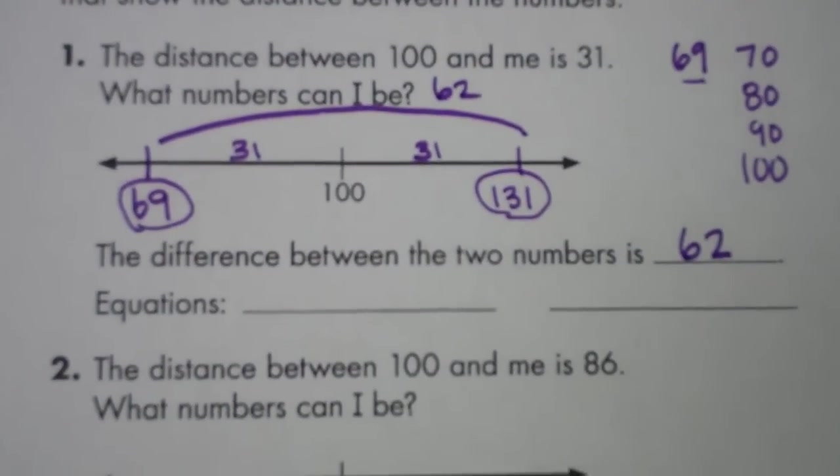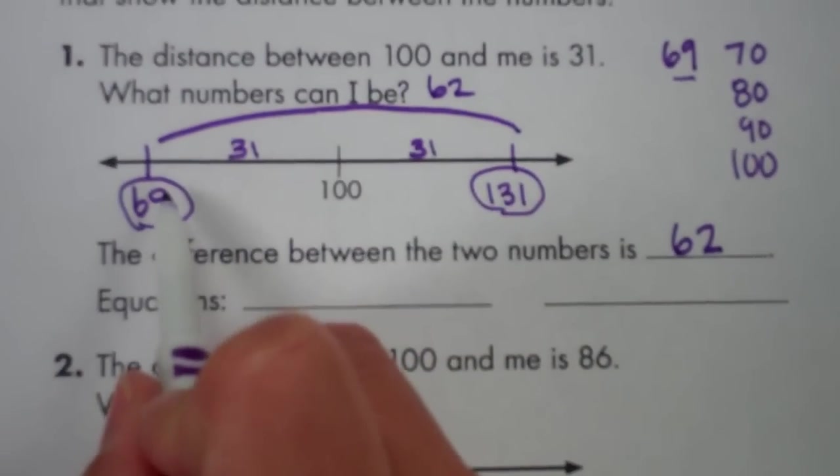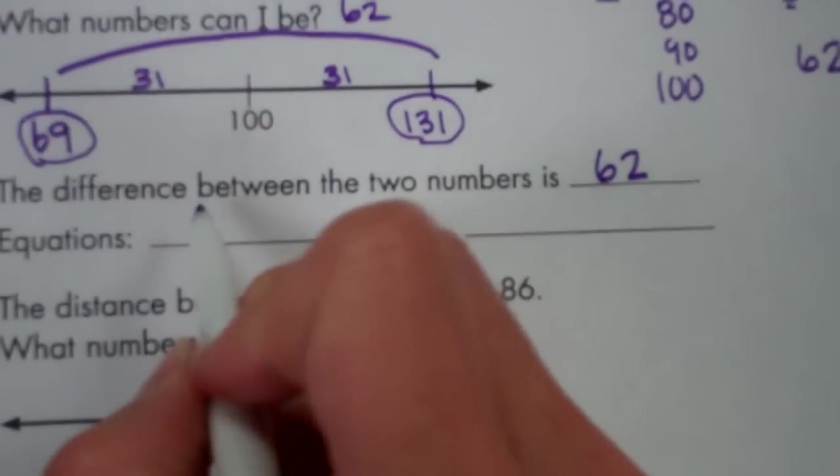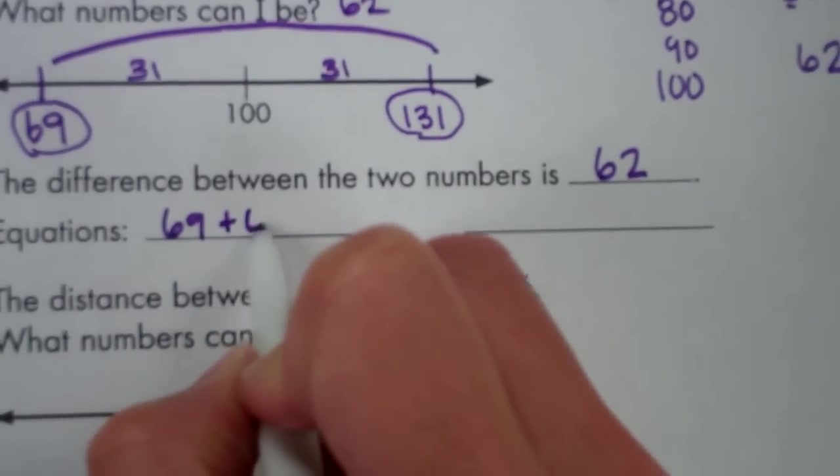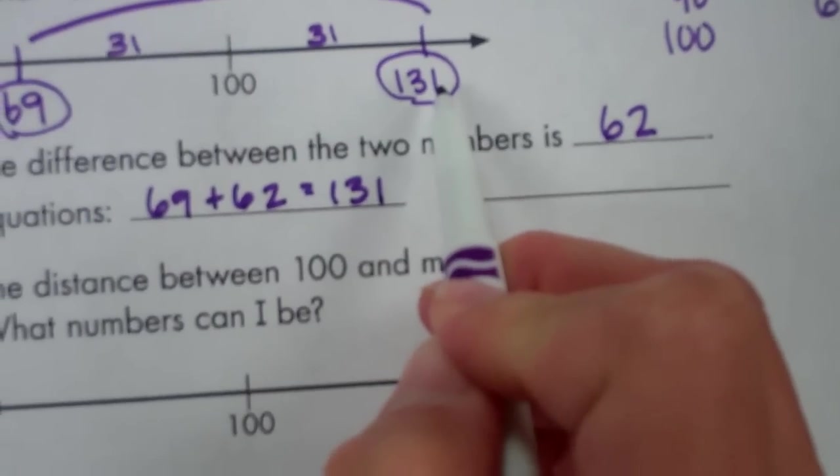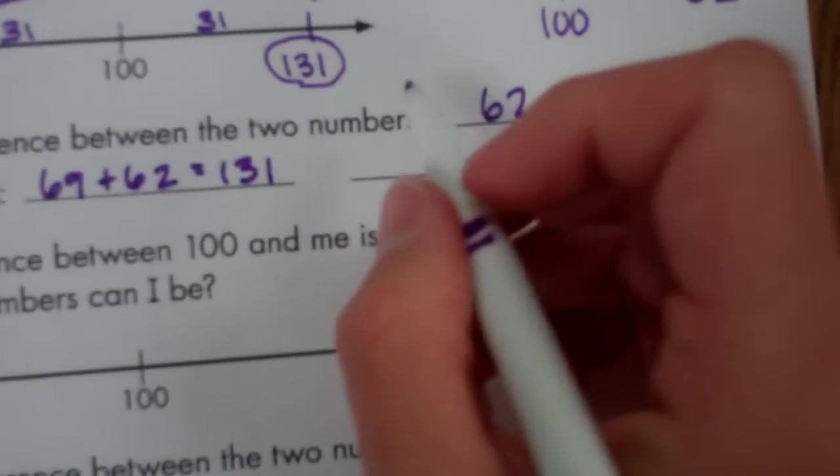Now we can use our number line to write an addition problem and a subtraction problem. If we start at 69 and add 62, our answer will be 131. And if we start at 131 and subtract 62, our answer will be 69.